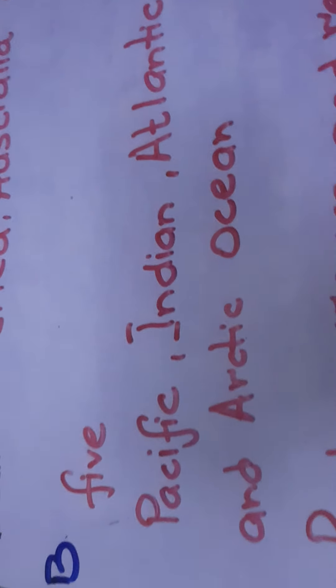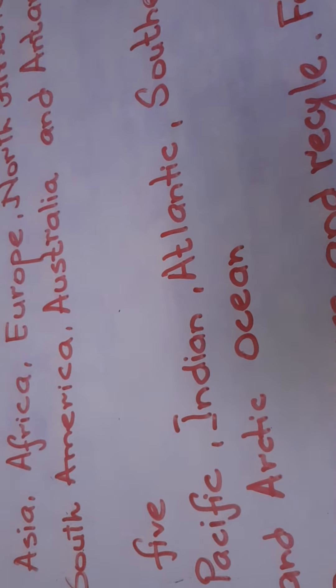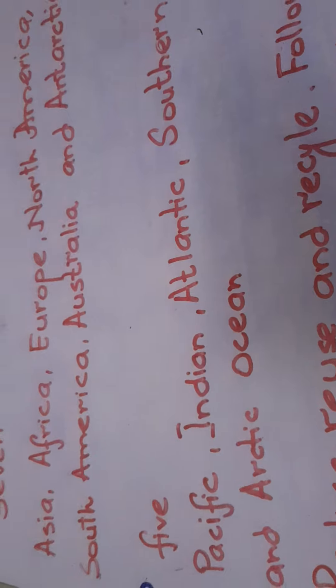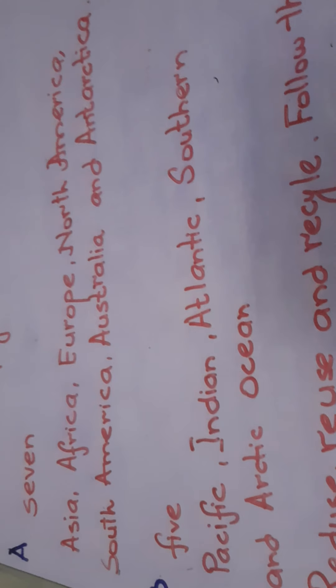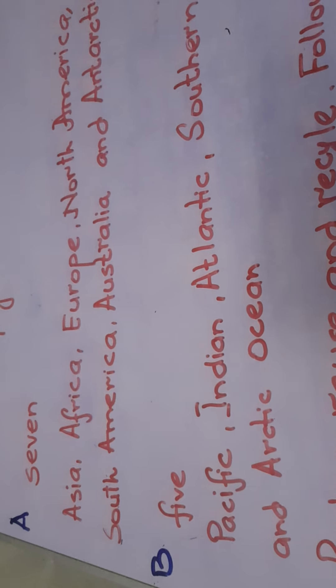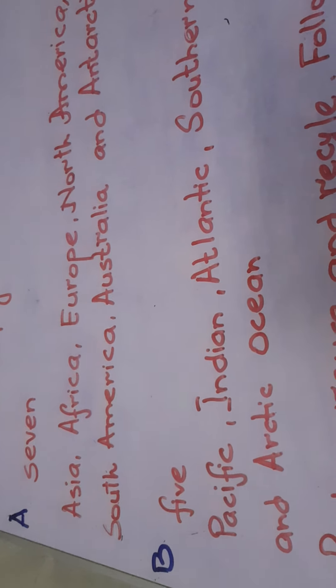Question number two: how many oceans are there? Write the names. There are five oceans — Pacific, Indian, Atlantic, Southern, and Arctic Ocean. This is the answer to question number two.